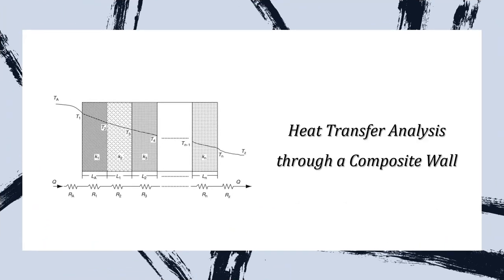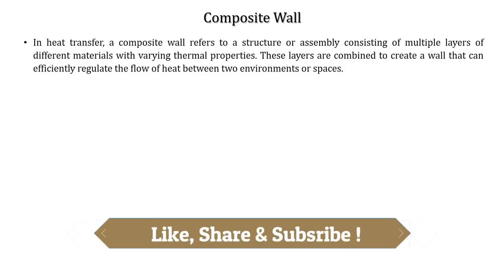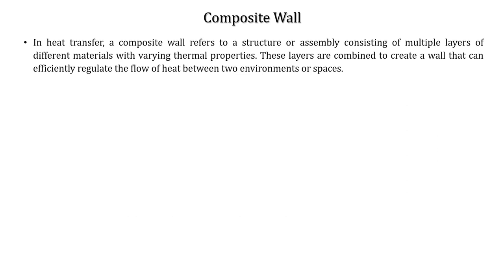This is the composite wall, and you can see that the heat transfer is to be studied between two ranges of temperatures — TA and TZ — whereas T1, T2, T3, T4, and Tn-1 are the intermediate temperatures. In heat transfer, a composite wall refers to a structure or assembly consisting of multiple layers of different materials with varying thermal properties. These layers are combined to create a wall that can efficiently regulate the flow of heat between two environments or spaces.